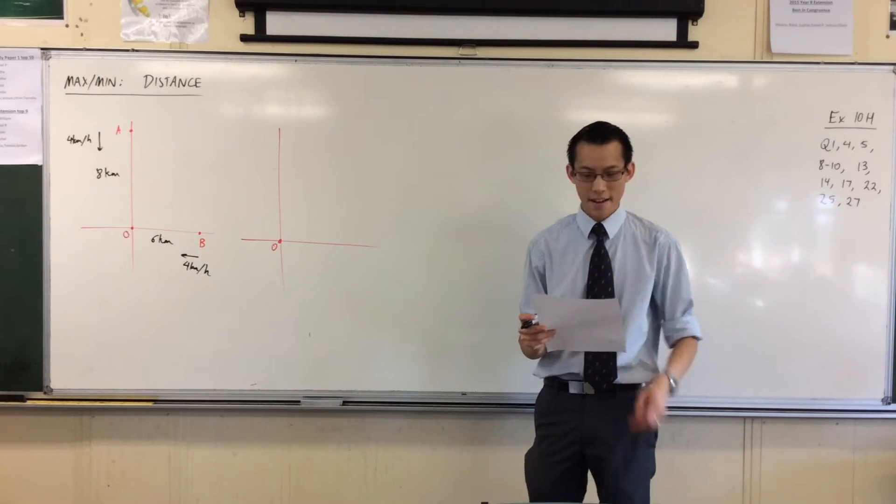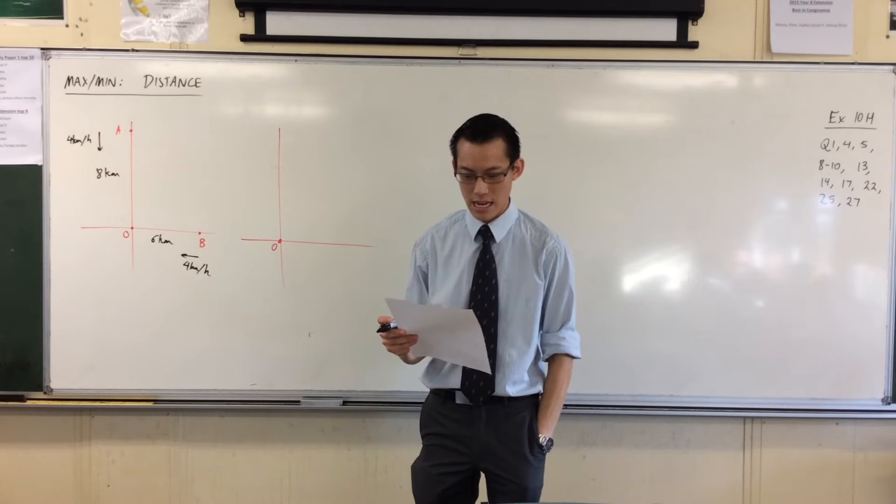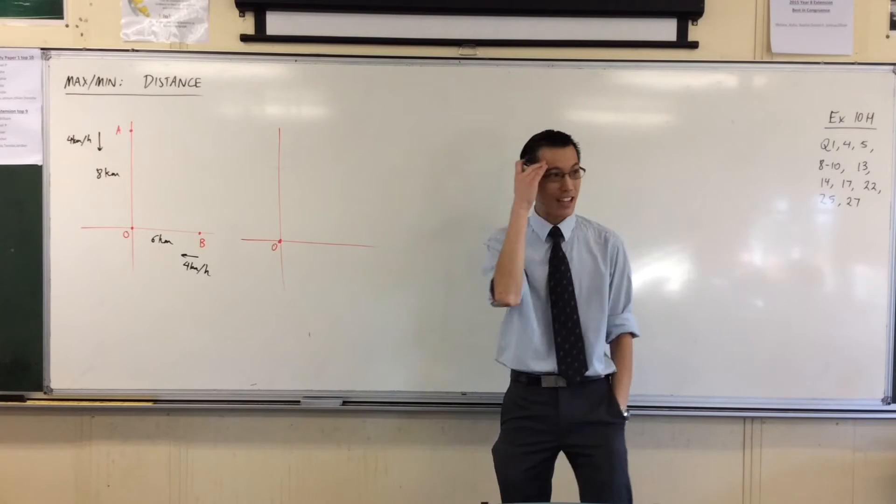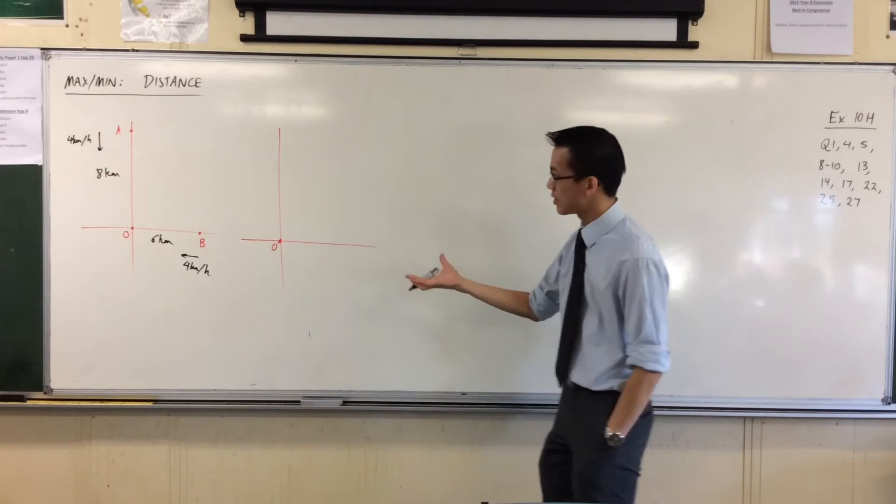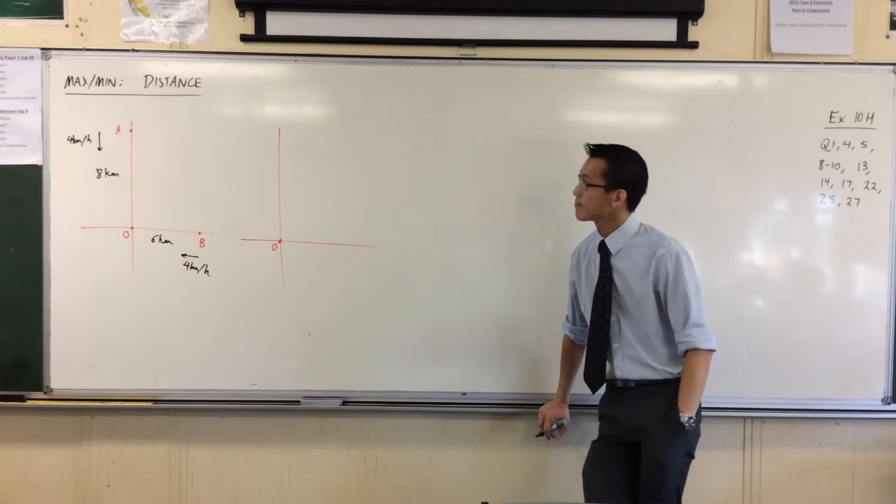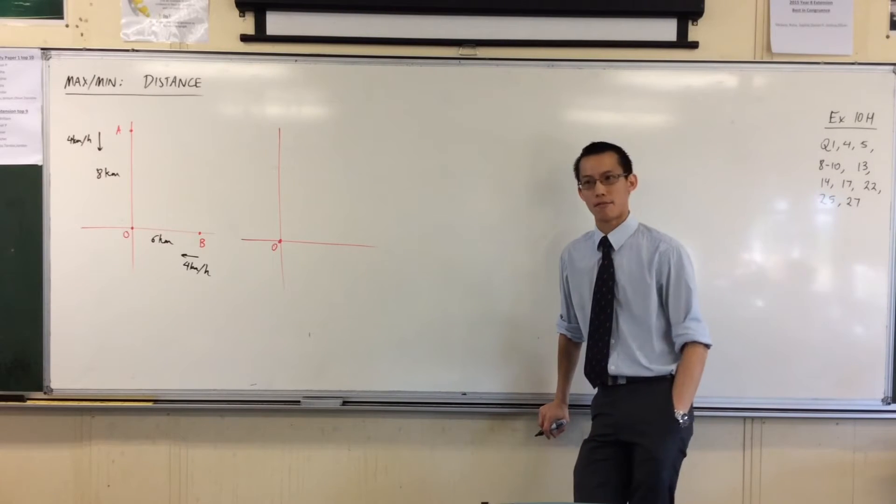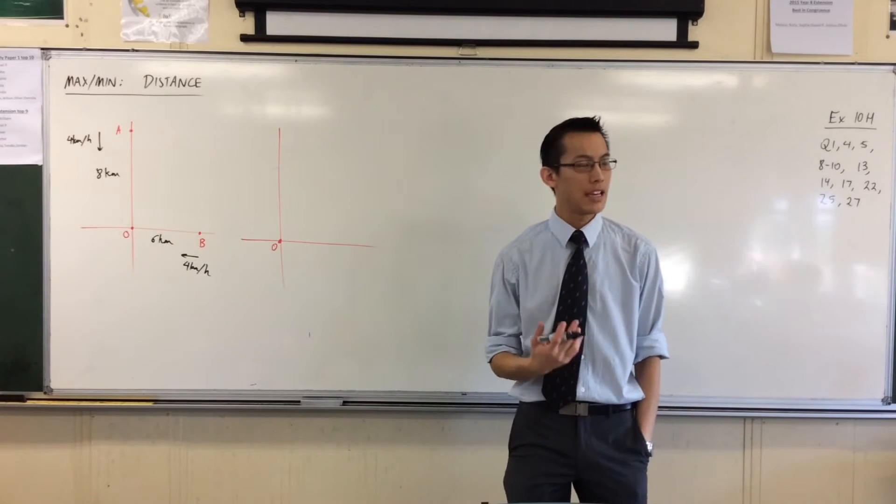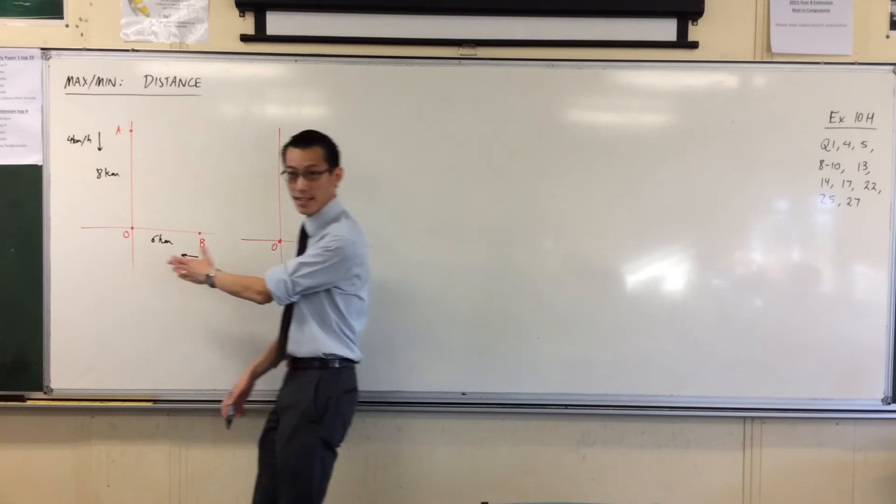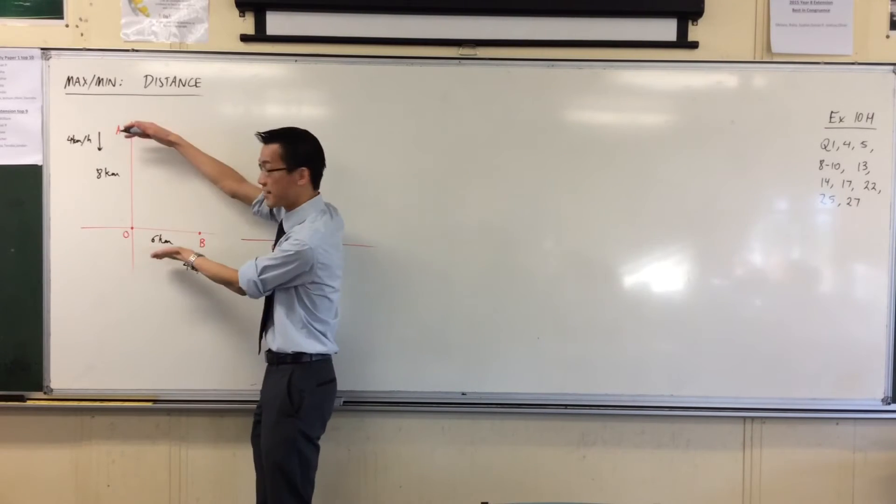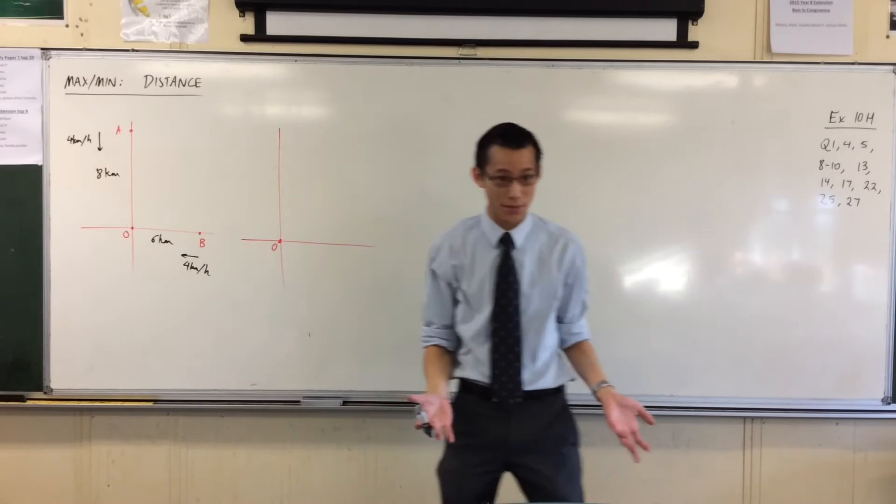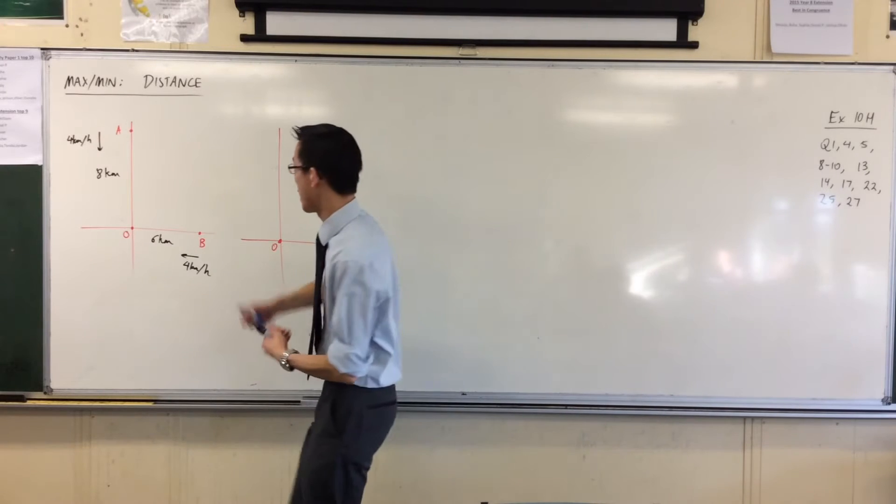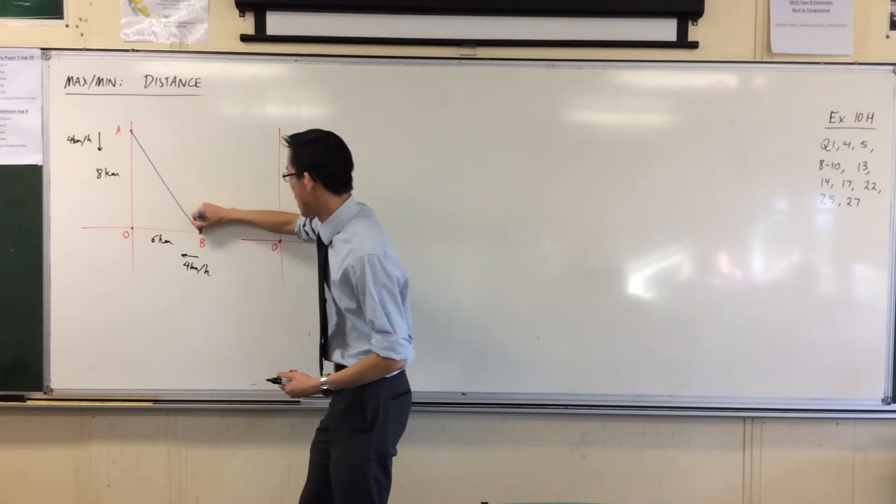I've got all the information the question has given me—that's it, there's no other data. Then it says find their distance apart after T hours. Then you pause and you look and you're kind of in trouble, because when you look at this, I know I have speeds on there, I know I have rates, but as I've constructed the diagram, everything on my diagram is constant. Do you notice that? This distance is 6 and this distance is 8, and that's what it is. There's no variables involved.